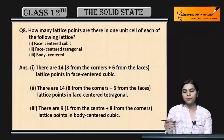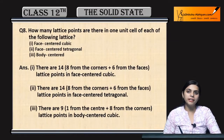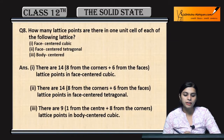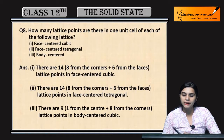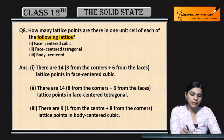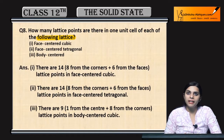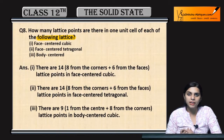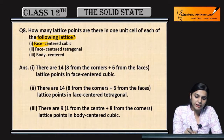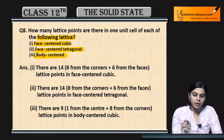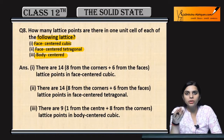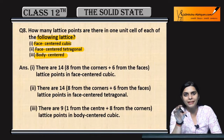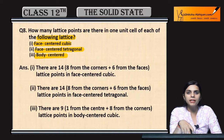Hello students, now we'll start with our next question, that is question number eight: how many lattice points are there in one unit cell of each of the following? In our unit cell, how many lattice points are in which unit cell — face centered cubic, face centered tetragonal, and body centered? Lattice points are where you can place your constituent particle or constituent atom.